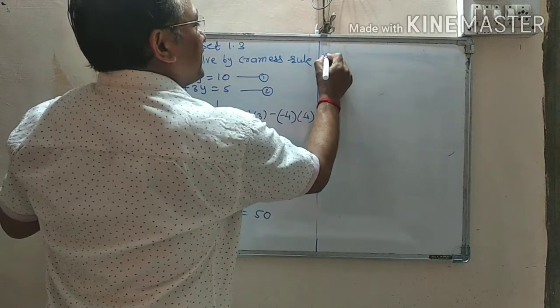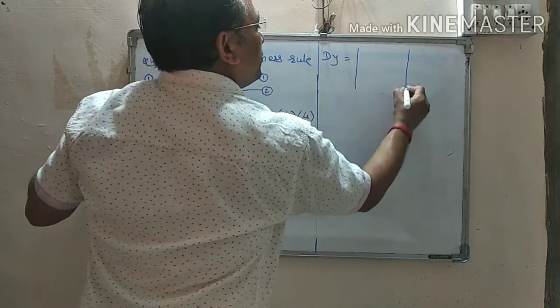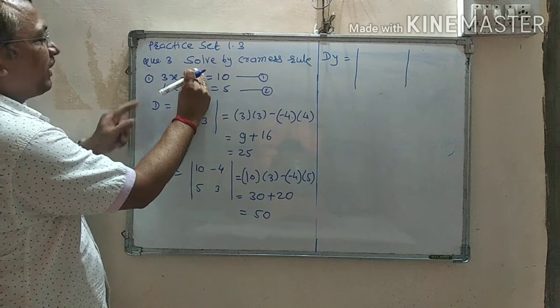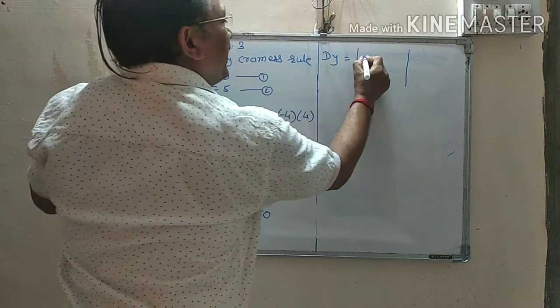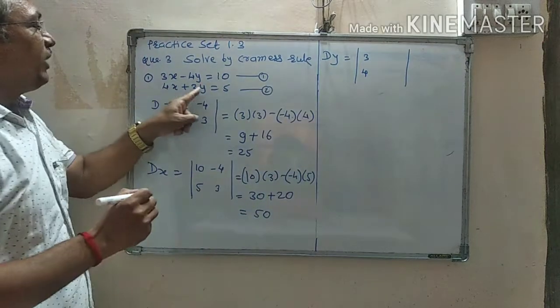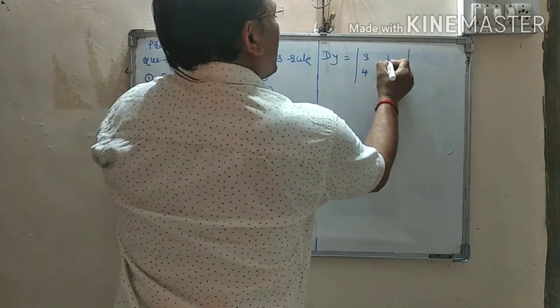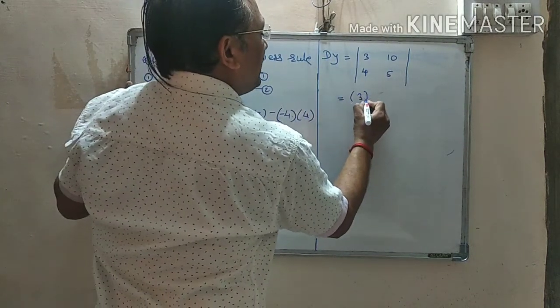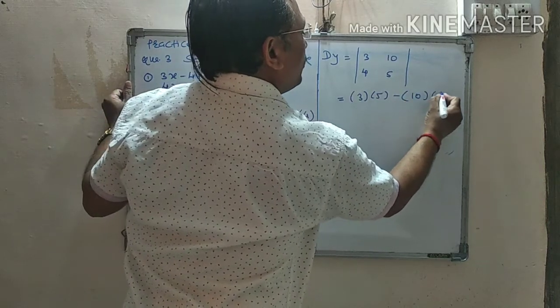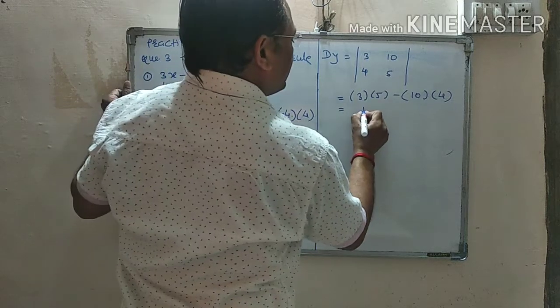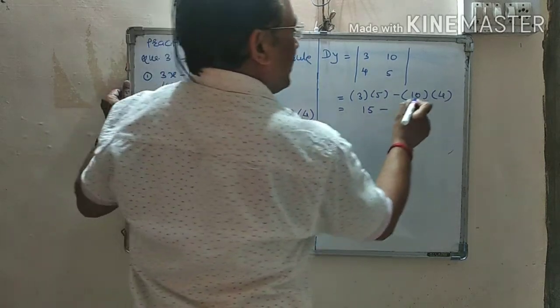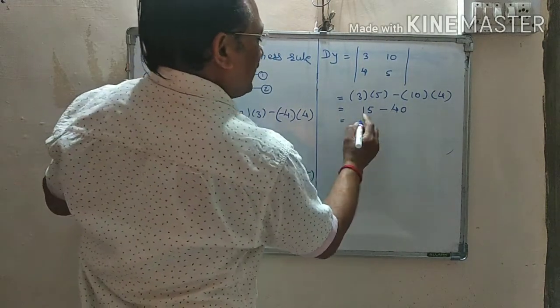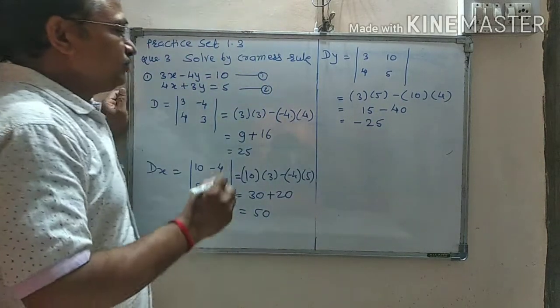Now let's calculate DY. DY is equal to - I told you when calculating DX we drop x, now when calculating DY we drop y's coefficients. When y's coefficients are dropped, what comes there? X coefficients: 3 and 4. And where y coefficients were dropped, the constants come: 10 and 5. It is equal to cross multiplication: 3 into 5 minus 10 into 4. It is equal to 5, 3 is 15 minus 10 into 4 is 40. 40 minus 15 leaves how much? Minus 25. Okay, therefore.